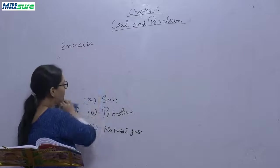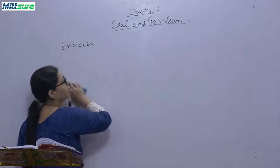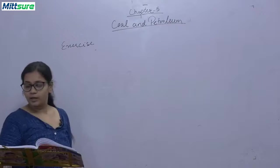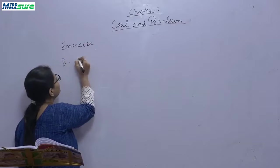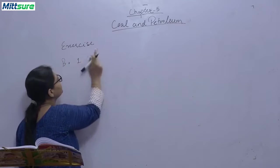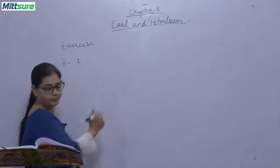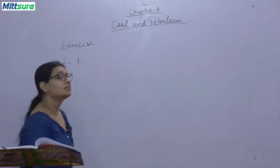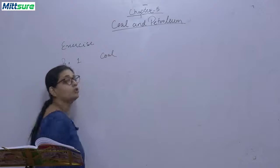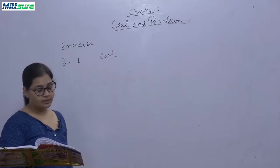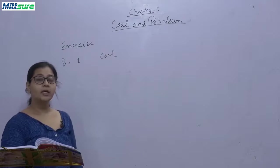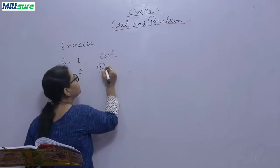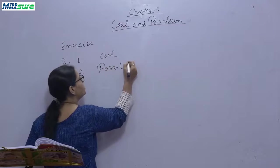Now B, fill in the blanks with appropriate words. The first question is, an example of naturally occurring solid fuel is coal. Second, fuels which are formed by the decomposition of dead plants and animals are called fossil fuels.